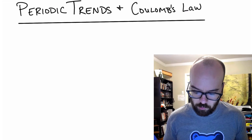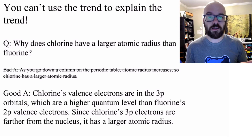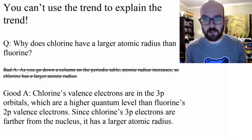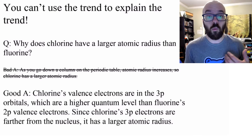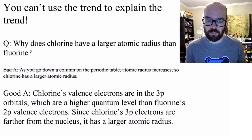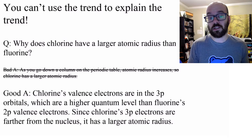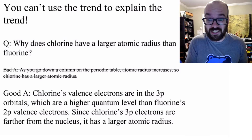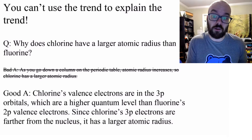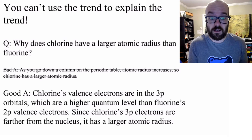One quick thing I want to mention before we get into this: on the AP chemistry test, you can't use the trend to explain the trend. For example, if you're asked why chlorine has a larger atomic radius than fluorine, a bad answer would be: as you go down the column on the periodic table, the atomic radius increases, so chlorine has a larger atomic radius. That basically just says chlorine has a larger atomic radius because chlorine has a larger atomic radius — it doesn't really explain why.